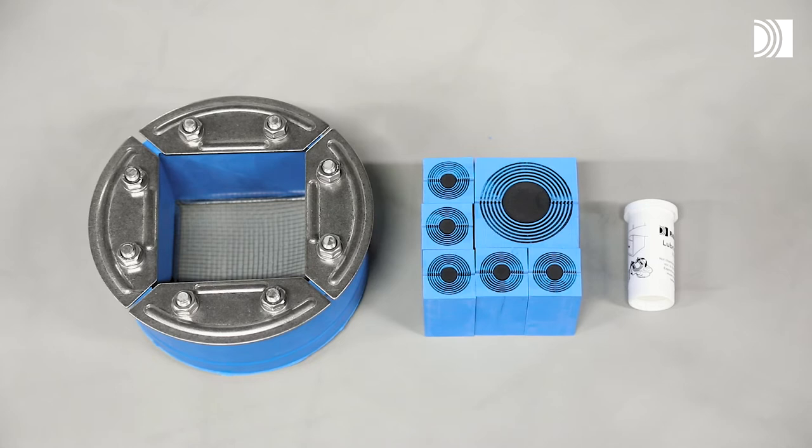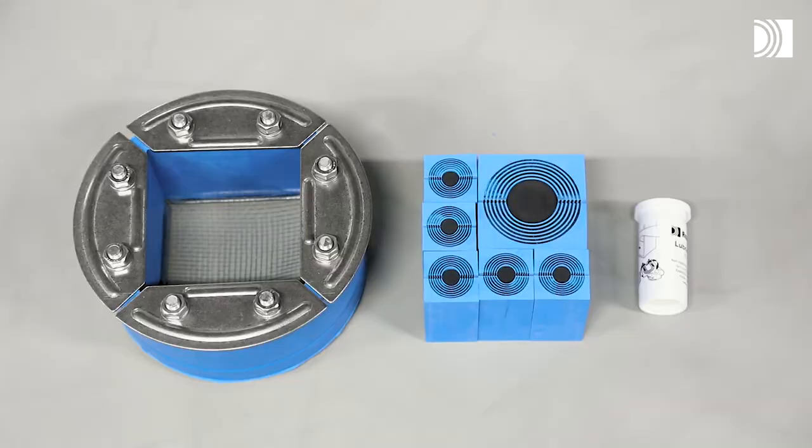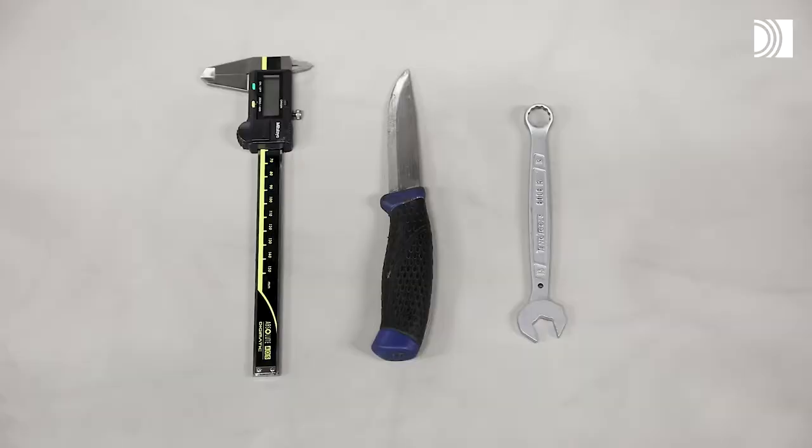To install a Roxtec R Transit, you need the Roxtec R Frame, Roxtec RM Sealing Modules and Roxtec Lubricant, as well as a caliper, a knife and a spanner.